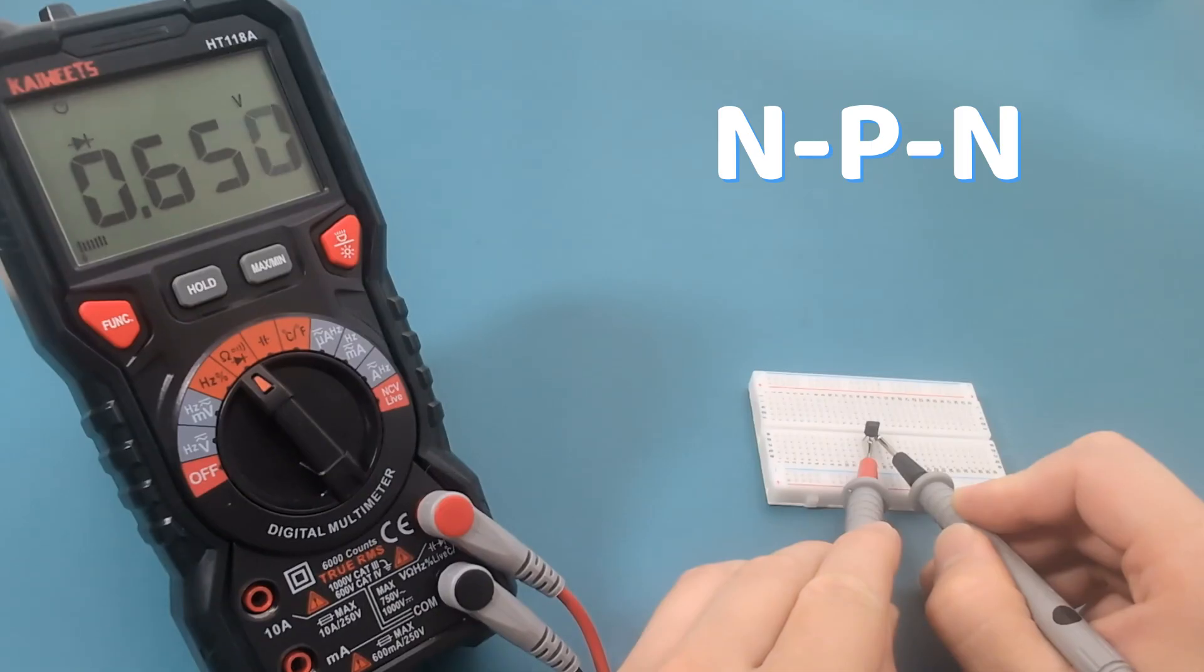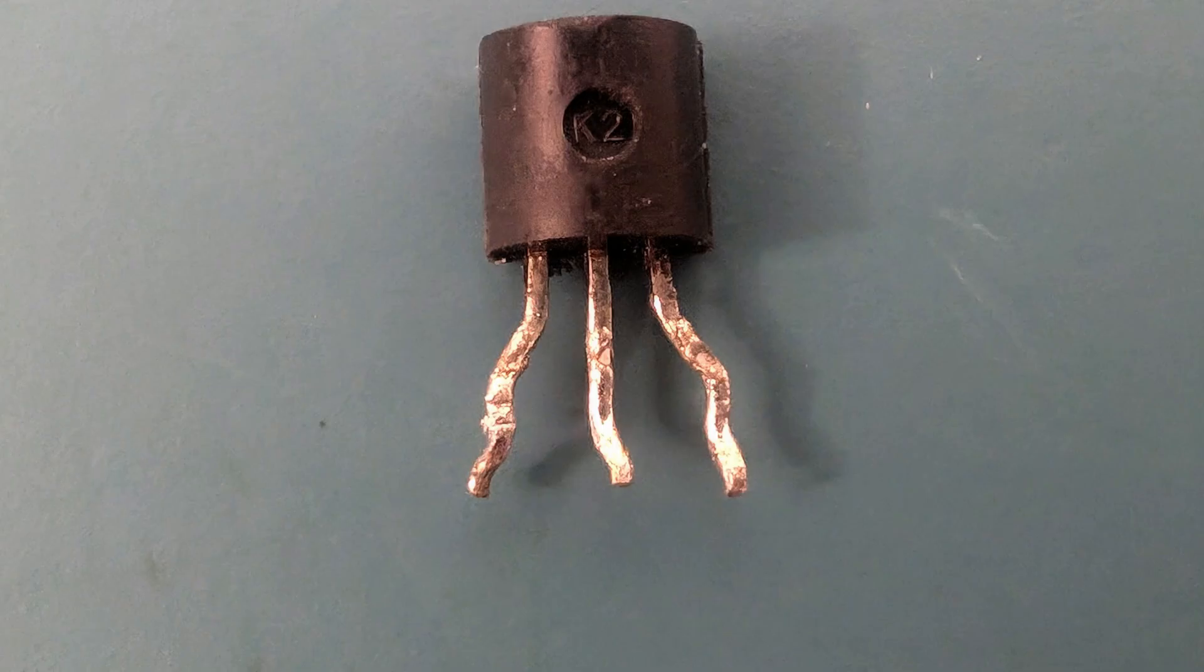We're getting a reading so this transistor is an NPN. The voltage drop is around 646 millivolts. Since the third wire has the highest voltage drop, it's the emitter. The first wire is the collector and the second wire is the base.